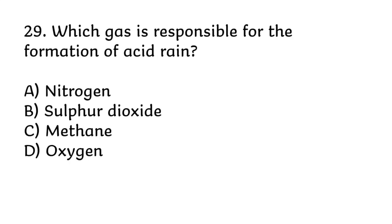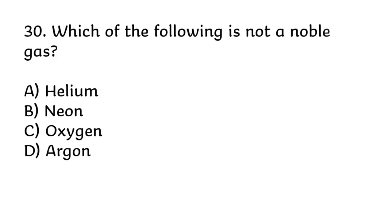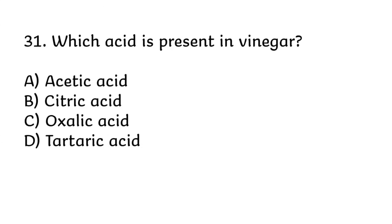Which gas is responsible for the formation of acid rain? Correct answer is B, sulphur dioxide. Which of the following is not a noble gas? Correct answer is C, oxygen. Which acid is present in vinegar? Correct answer is A, acetic acid.